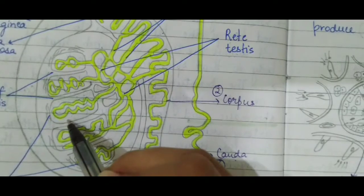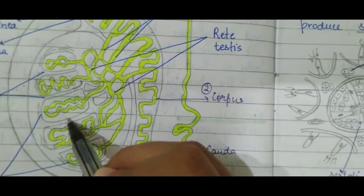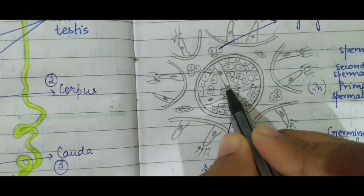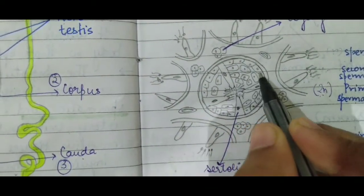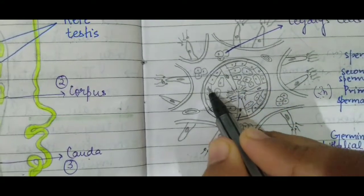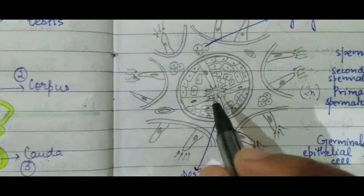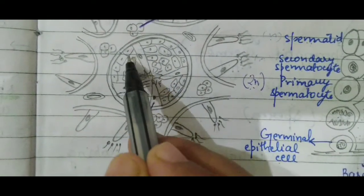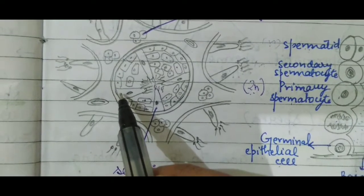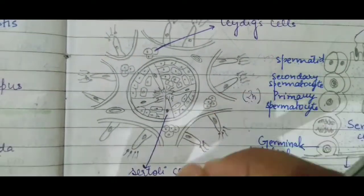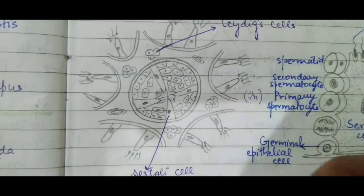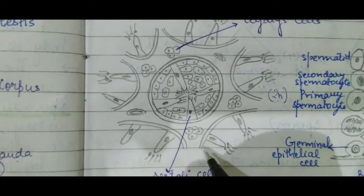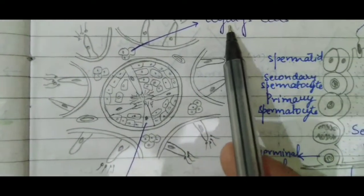Leydig cells are present in between the seminiferous tubules, while Sertoli cells are present in between the germinal epithelial cells of the seminiferous tubules. This is the location of Sertoli cells and Leydig cells within the testicular lobule.